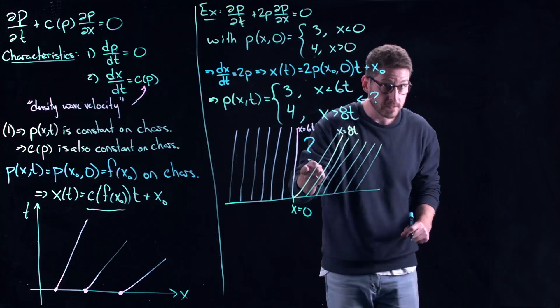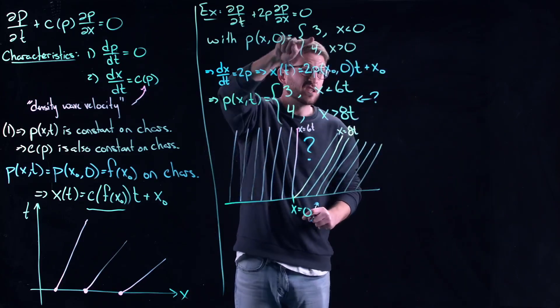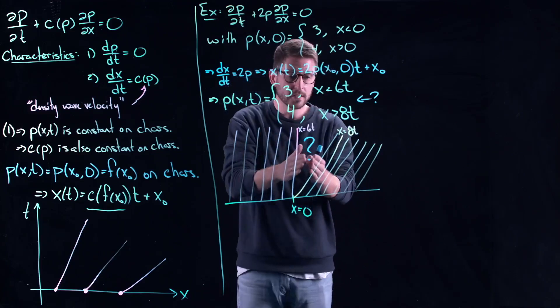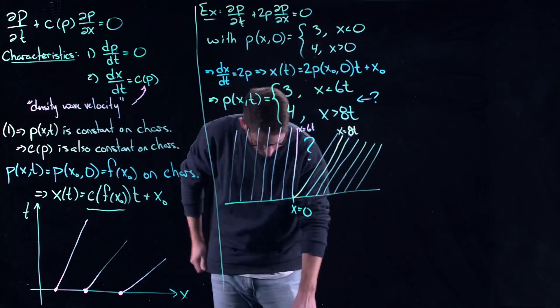Does the solution just not exist there? Because originally, the initial condition had a jump discontinuity at x equal to 0, and you can see that jump discontinuity creates a gulf, a gap.